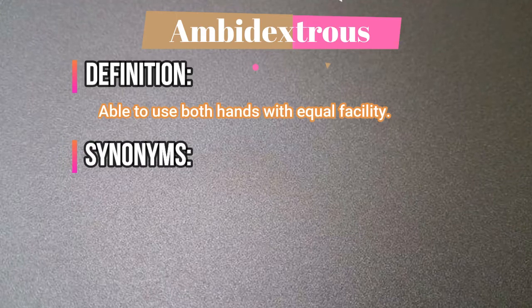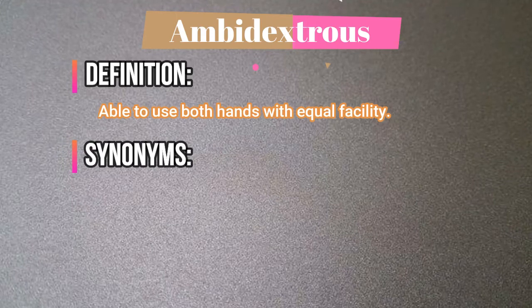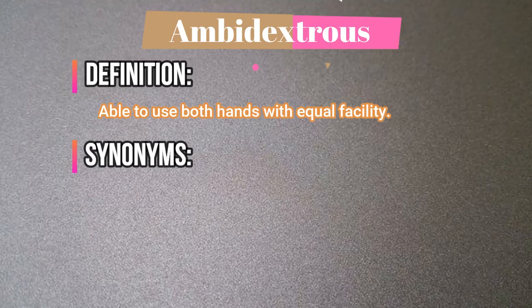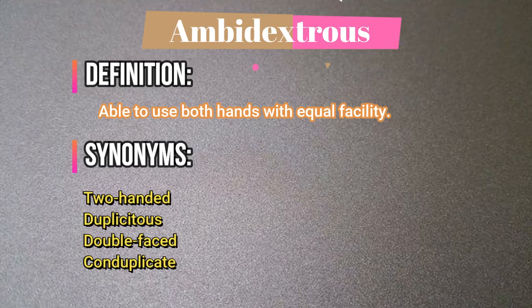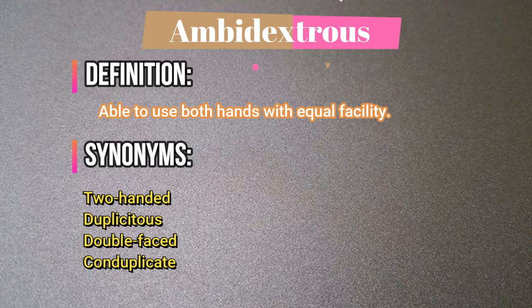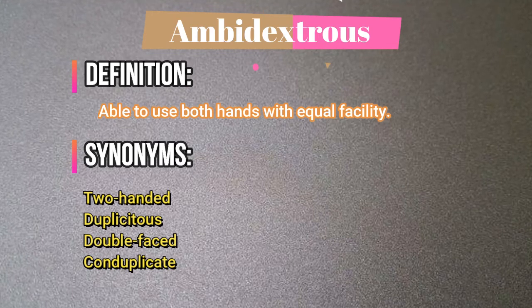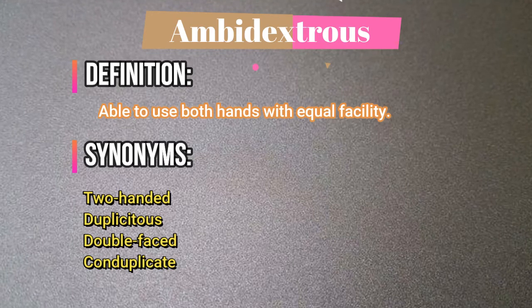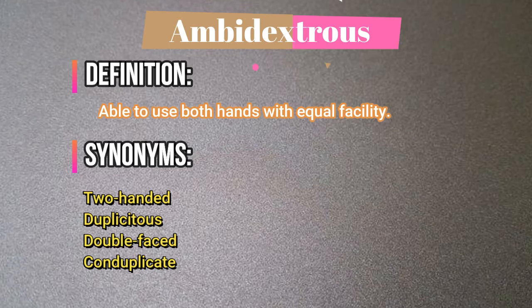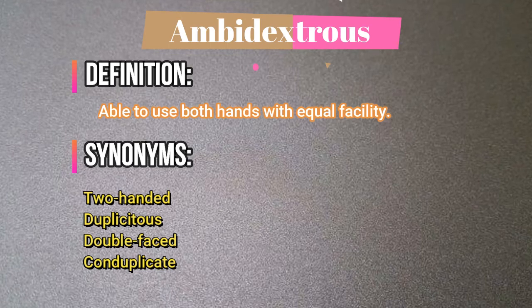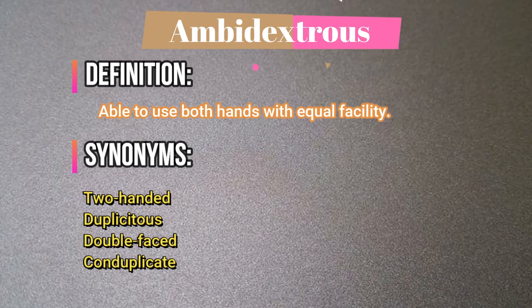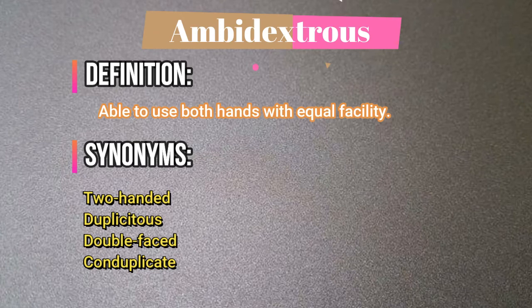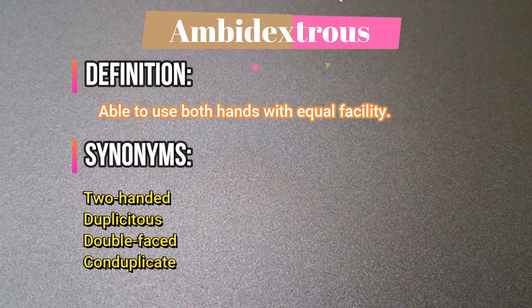The synonyms of ambidextrous are: two-handed, duplicitous, double-faced, and can duplicate.